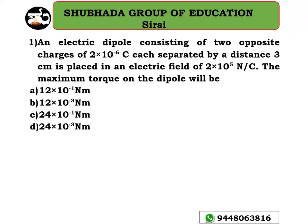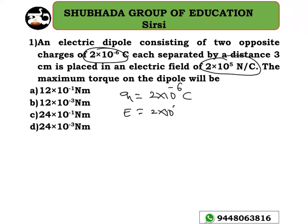The charges are 2 × 10⁻⁶ coulomb each, separated by a distance of 3 centimeters, placed in an electric field of 2 × 10⁵ Newton per coulomb. The maximum torque on the dipole is to be found. The given values are: Q = 2 × 10⁻⁶ coulomb and E = 2 × 10⁵ Newton per coulomb.